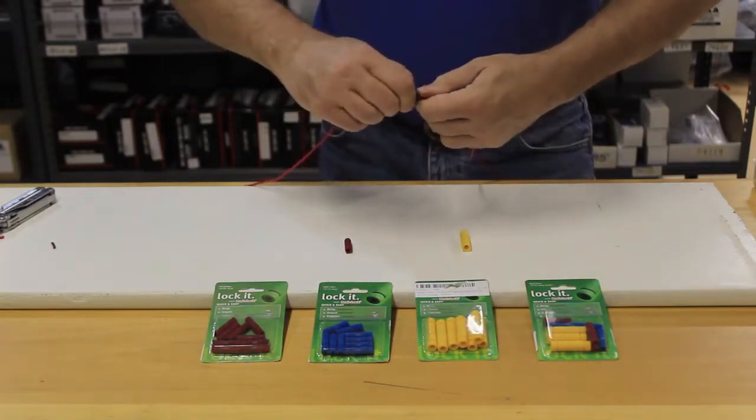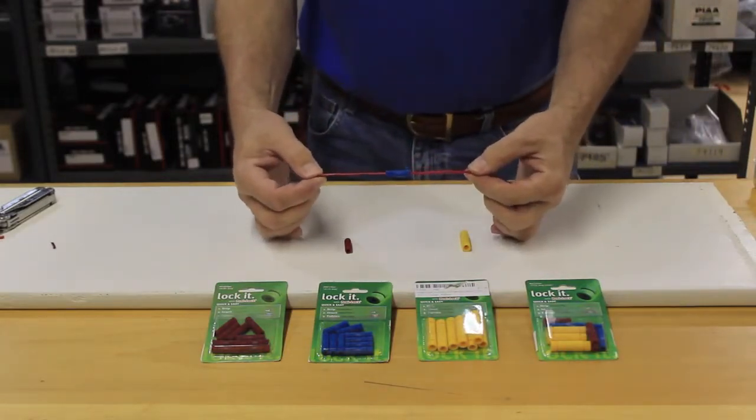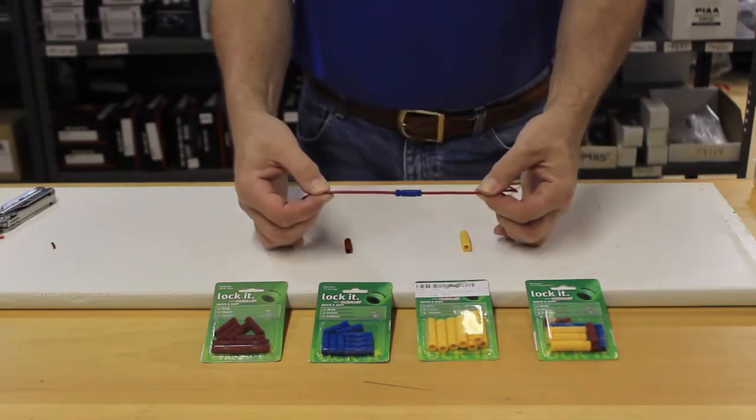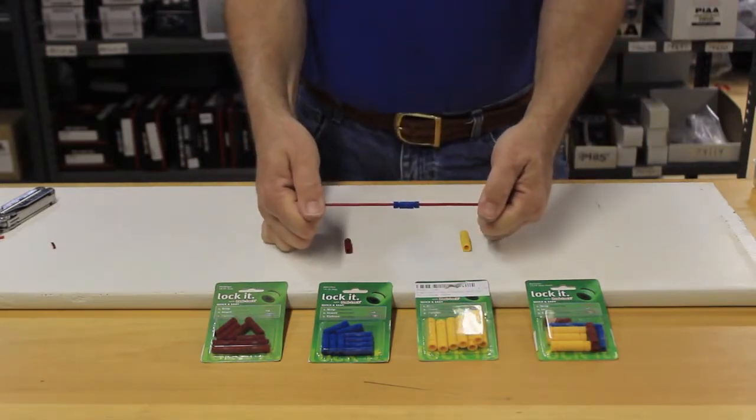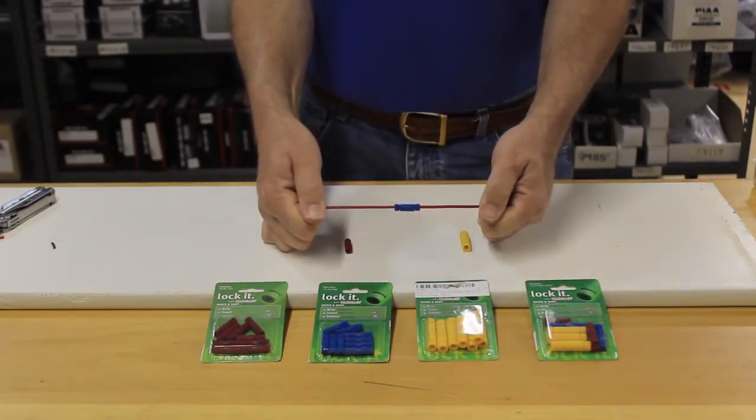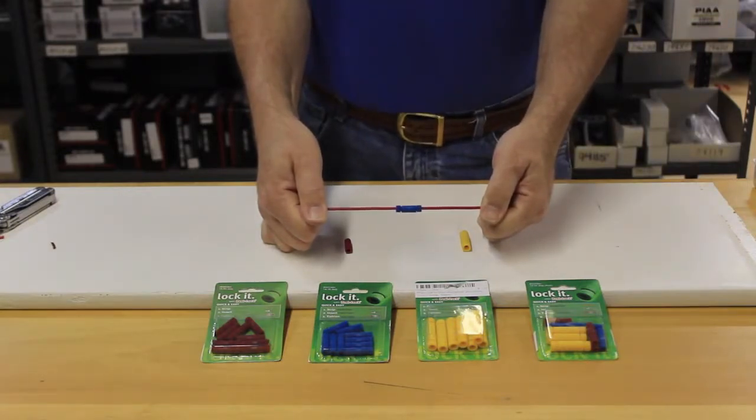Now you have a connection that is not only a good electrical connection, it's also a strong mechanical connection. The Posi-Lock is so strong that you can pull as hard as you like. And if you pull hard enough, you'll break the wire. But it's not likely that the Posi-Lock would ever let go.